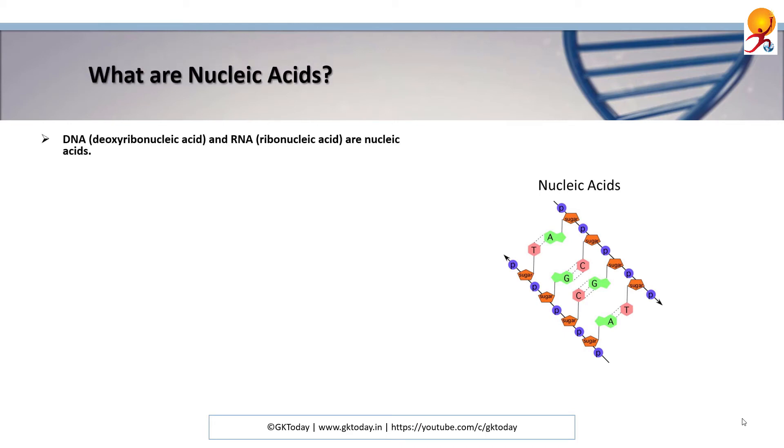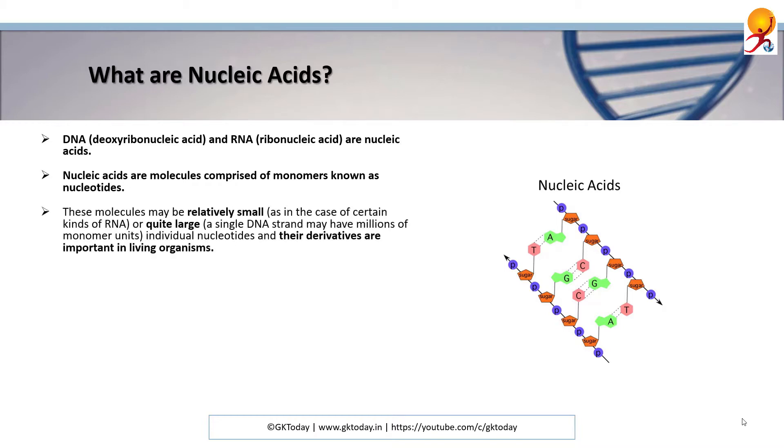What are Nucleic Acids? DNA or deoxyribonucleic acid and RNA ribonucleic acid are nucleic acids. These are molecules comprised of monomers known as nucleotides. These molecules may be relatively small, which is the case with RNA, or quite large as is the case with DNA.